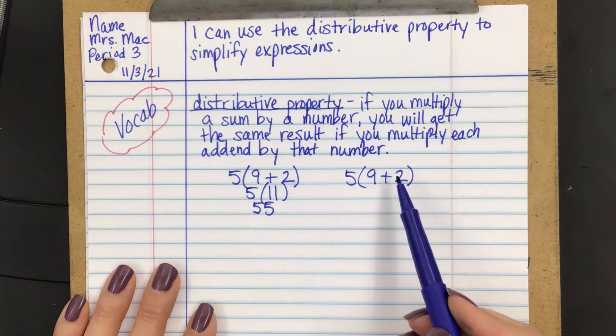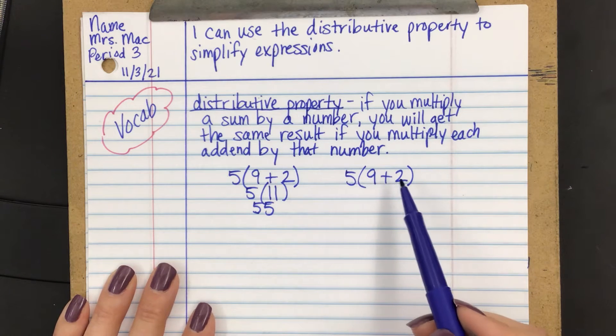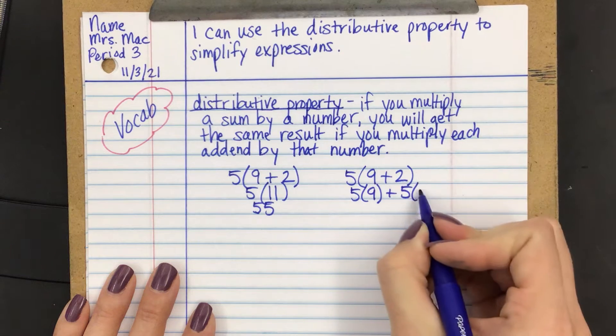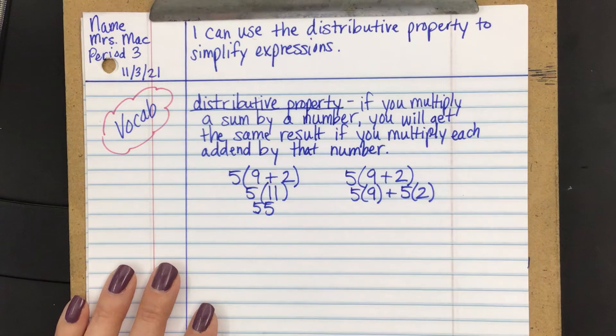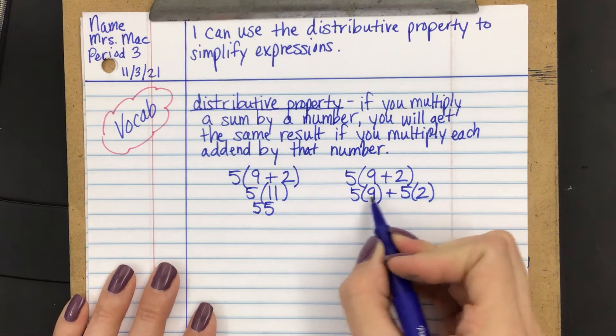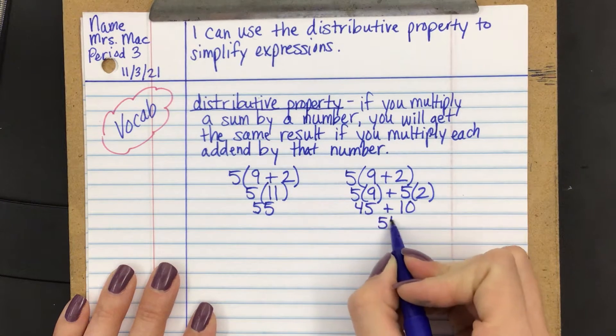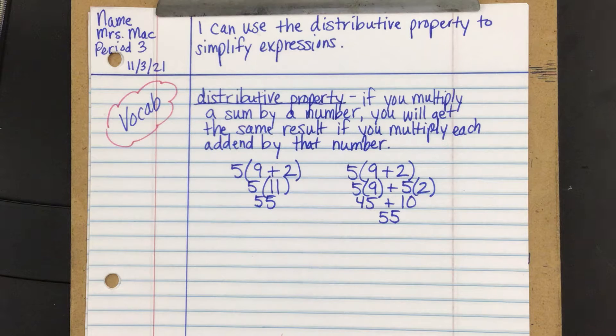Now the distributive property shows you that you could do something different than the order of operations and still get the correct answer. So instead of adding these first, we're actually going to multiply by 5. But we're going to do that by multiplying each addend by 5. So it would be 5 times 9 plus 5 times 2. This is distributing. You're basically saying, okay, I'm going to give the 5 to everything inside there. I'm going to multiply everything inside those parentheses by 5.